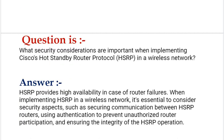Our next interview question is: What security considerations are important when implementing CISCO's Hot Standby Router Protocol (HSRP) in a wireless network? Your answer should be: HSRP provides high availability in case of router failures. When implementing HSRP in a wireless network, it's essential to consider security aspects such as securing communication between HSRP routers using authentication to prevent unauthorized router participation and ensuring the integrity of the HSRP operation.